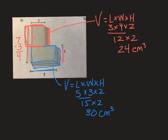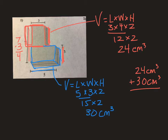The top red prism is 24 cubic centimeters, and the bottom blue one is 30 cubic centimeters. To find the total volume, I just add them up — the total volume is 54 cubic centimeters. I hope that was helpful; I'm going on to do number 2.